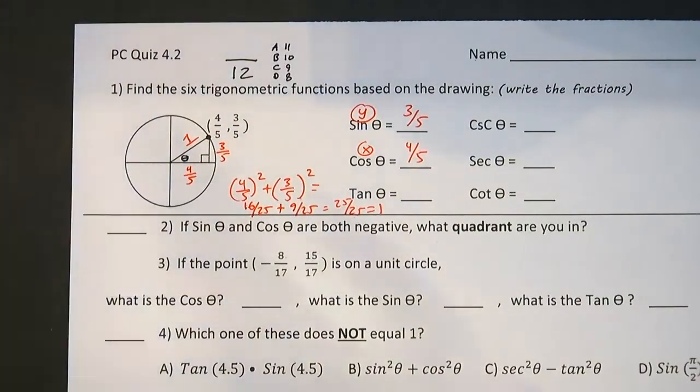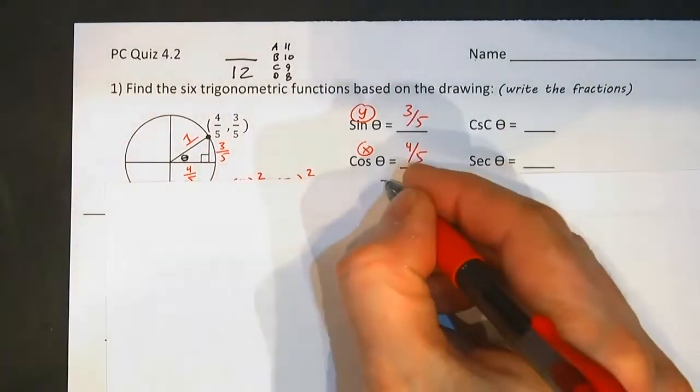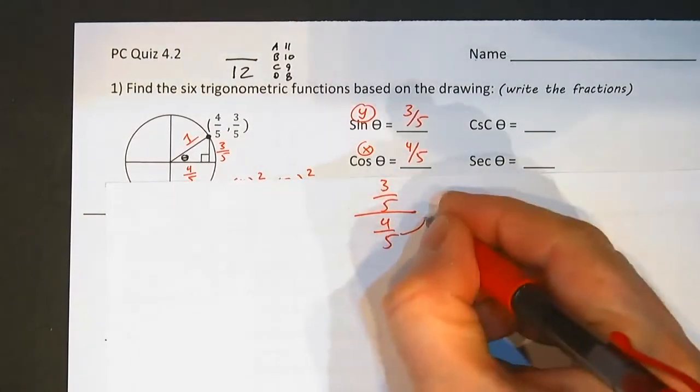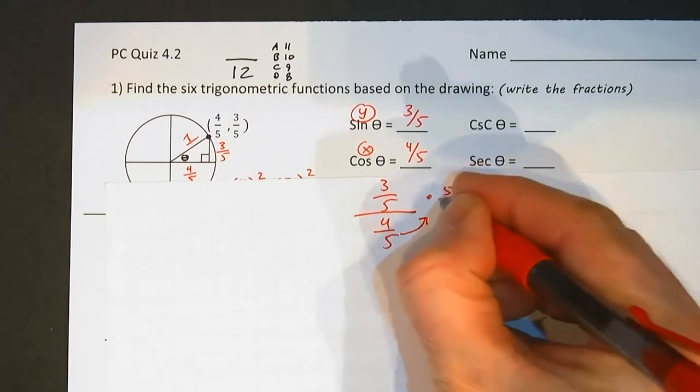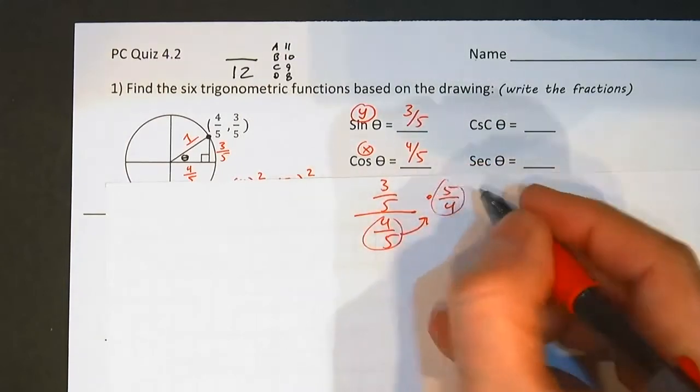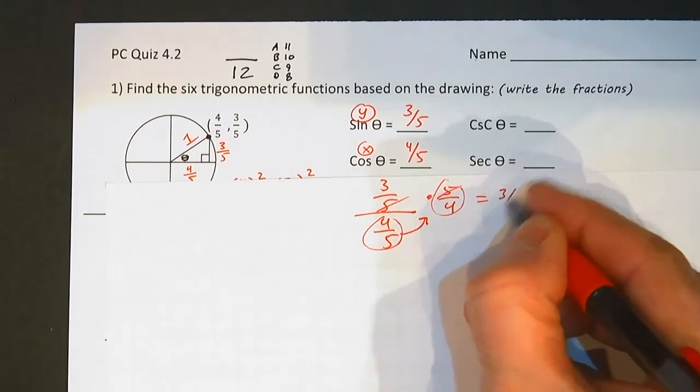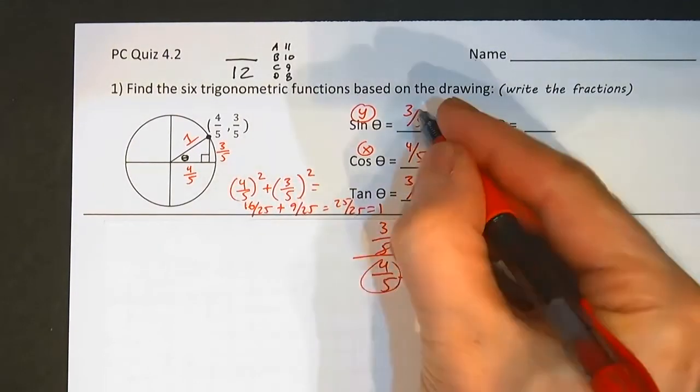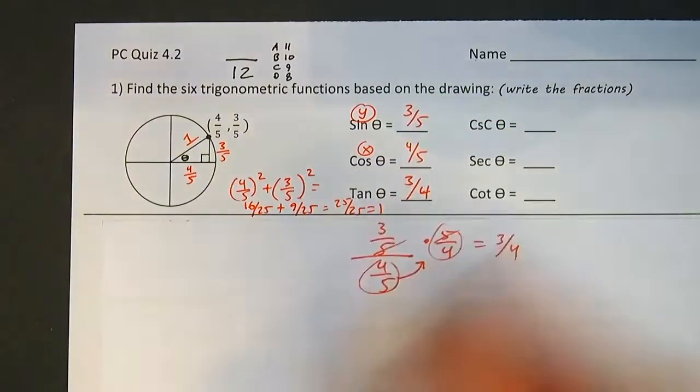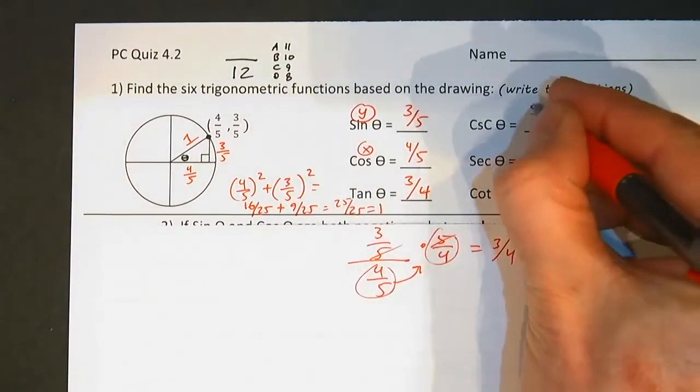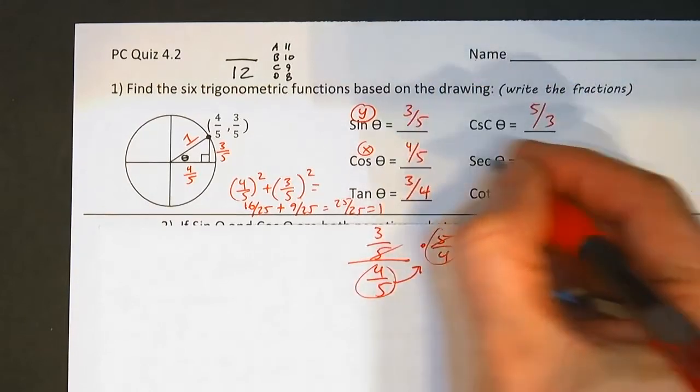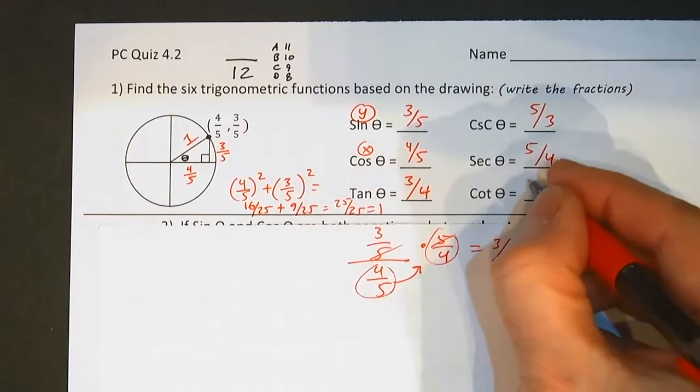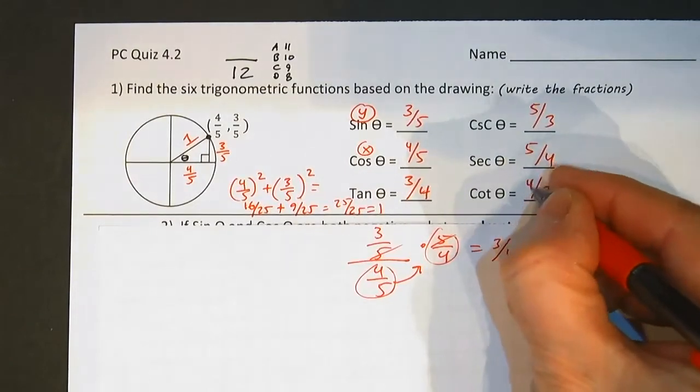So put this one over that. If we put 3 fifths over 4 fifths, well let's see, I could bring that up, make it a times, flip it over. Just take a little fraction. These cancel, 3 fourths. So 3 over 4. And these guys, these are just these guys upside down. So we'll put 5 over 3. Secant is cosine upside down, 5 over 4. Cotangent is tangent upside down, 4 over 3.